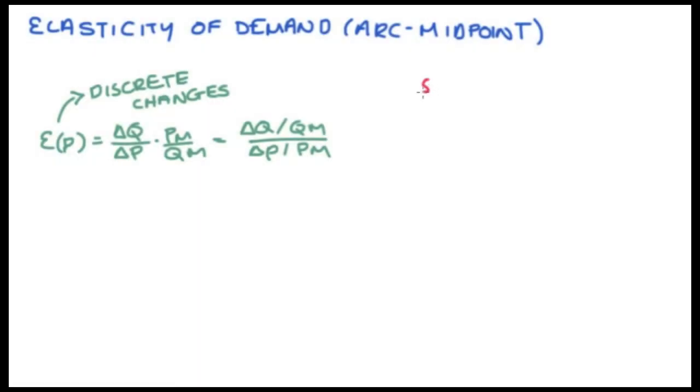So for instance, let's just say that for a particular product we have the demand curve P equals 10 minus Q, and it's the case that the price in the market increases from two to four dollars, and then we're asked around this price change are we dealing with inelastic, elastic, or unit elastic demand.